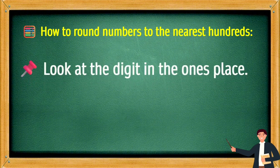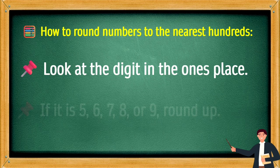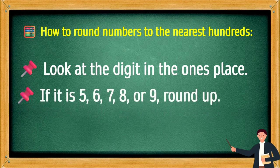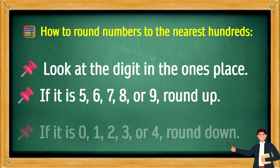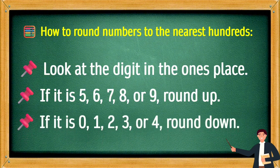Look at the digit in the tens place. If it is 5, 6, 7, 8, or 9, round up. If it is 0, 1, 2, 3, or 4, round down.